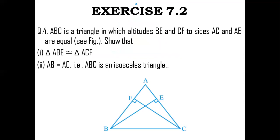Let us get to question number 4, which is very similar to question number 3. Here it is given that ABC is a triangle in which altitudes BE and CF to sides AC and AB are equal. The altitudes BE and CF are given as equal. We are supposed to prove that triangle ABC is an isosceles triangle by proving that AB is equal to AC. Let us get to the solution.